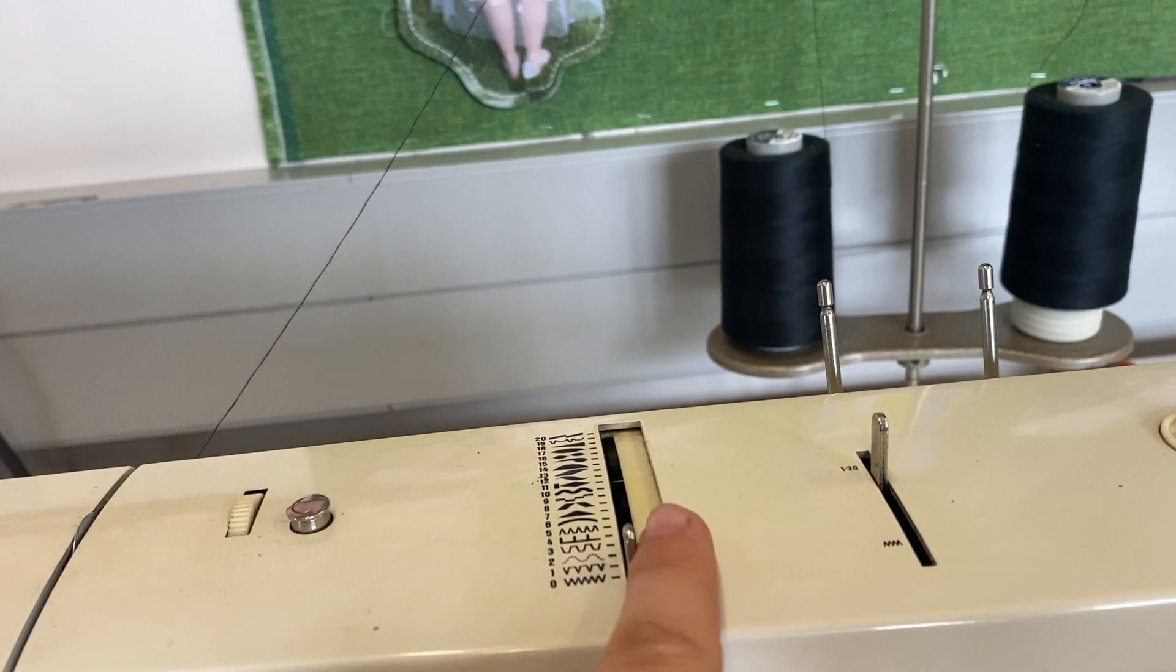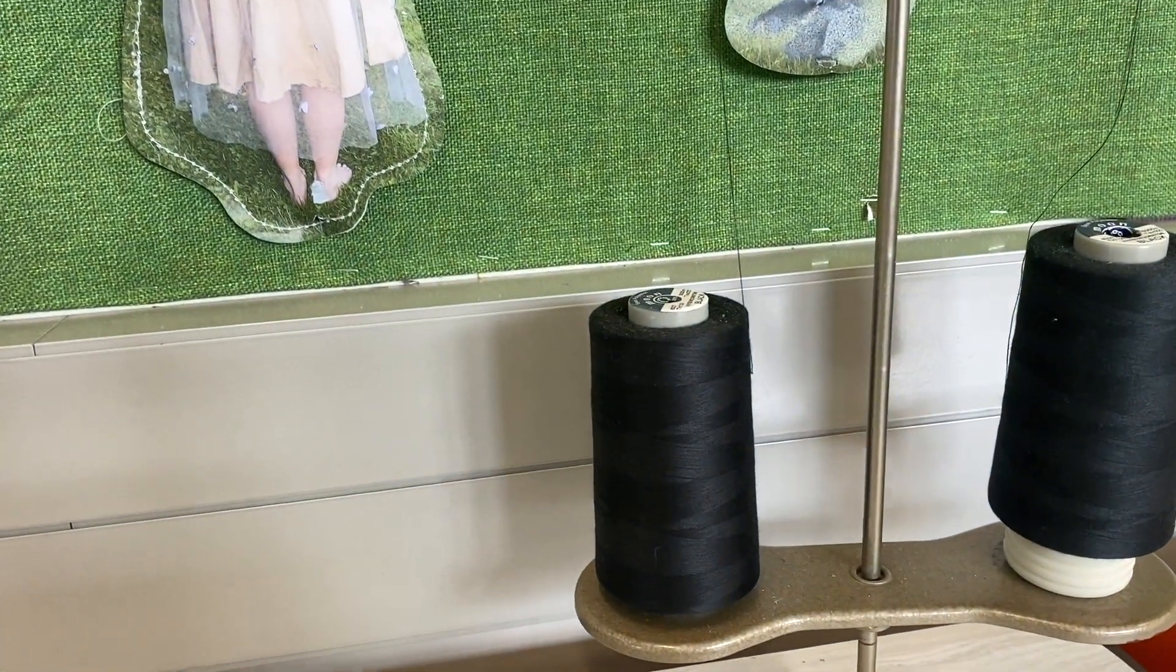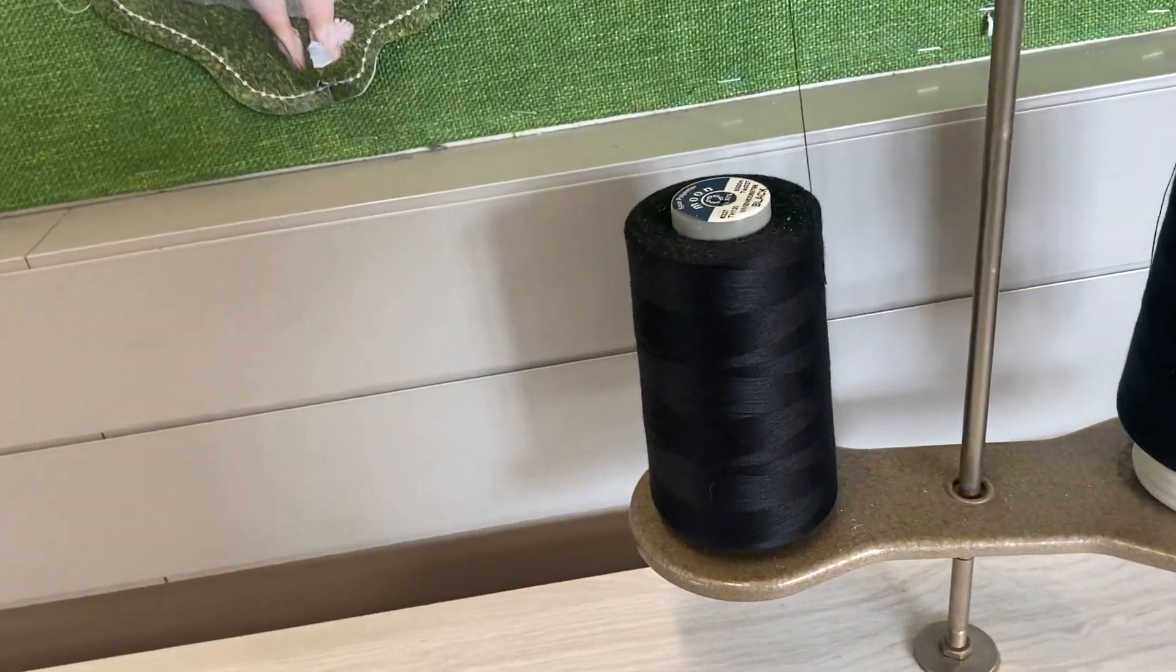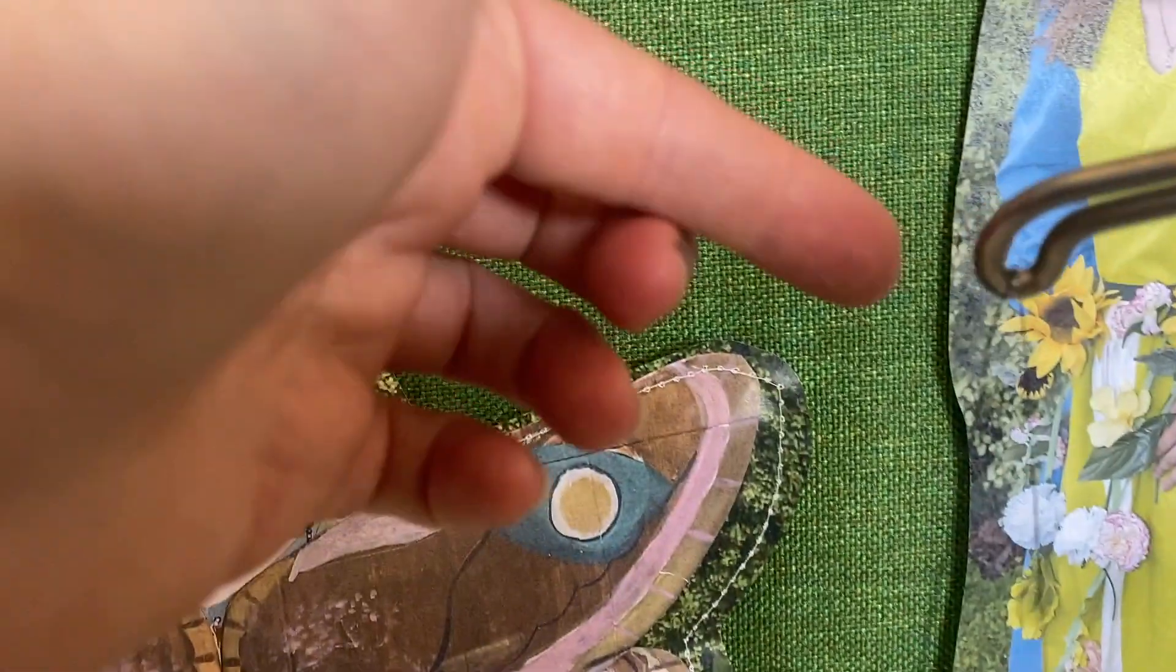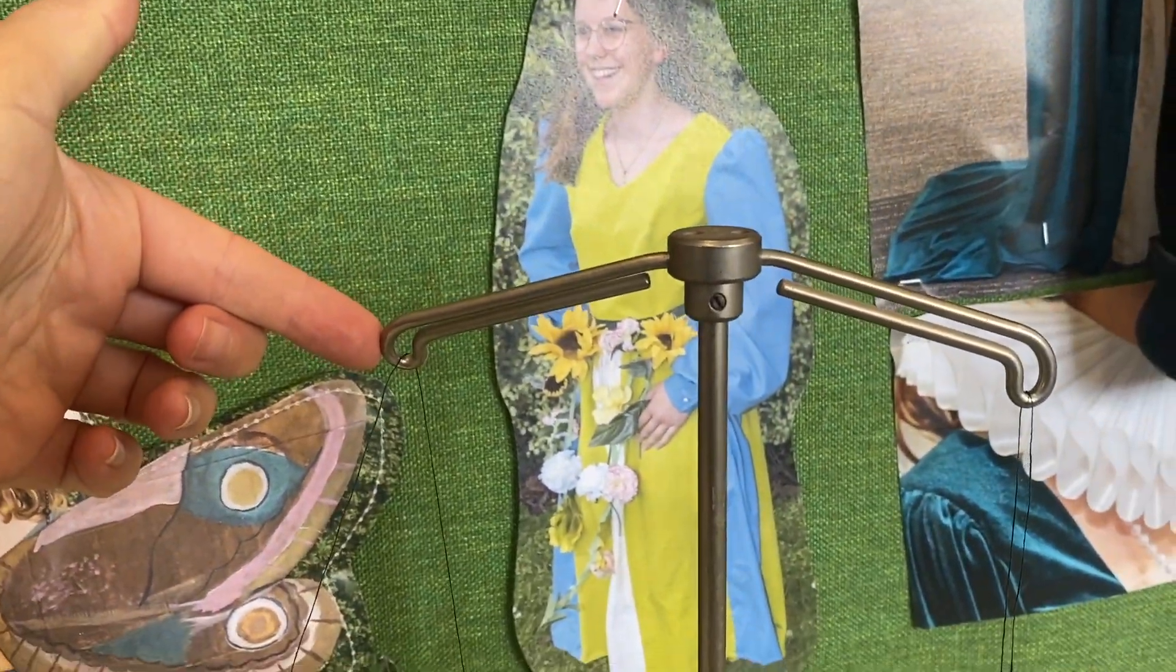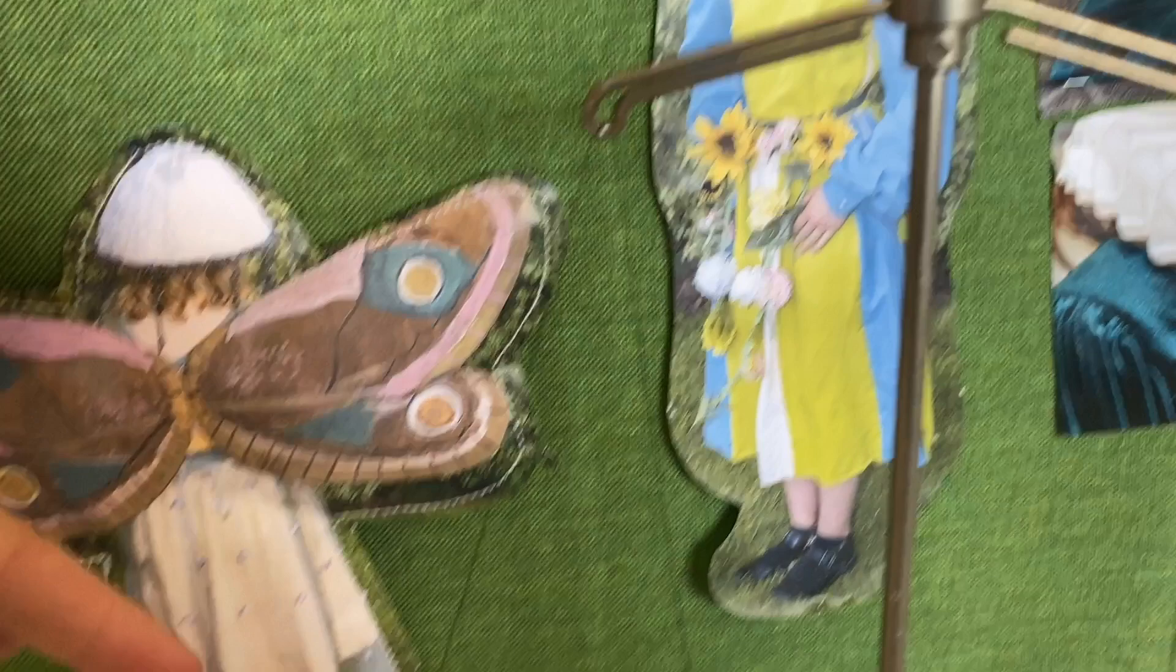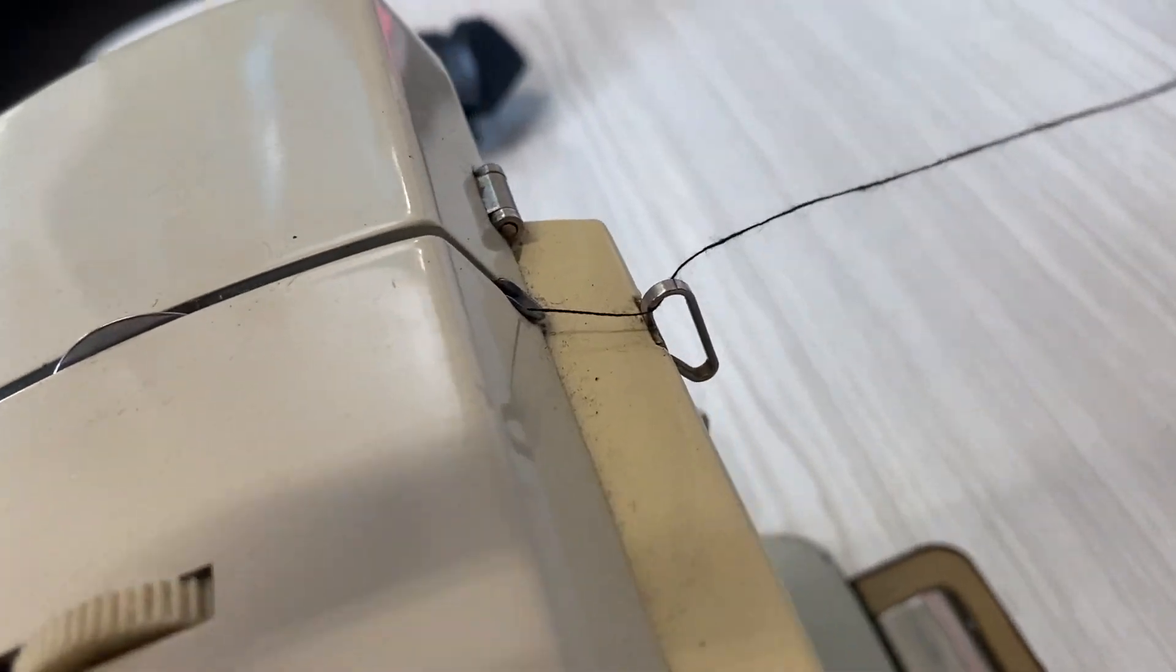Sometimes it will be connected to fill the bobbin, and that's okay—it can just stay there while you're using it. Your cone sits on there, comes up, and hooks back to front through this thing here, then comes down and hooks in there.